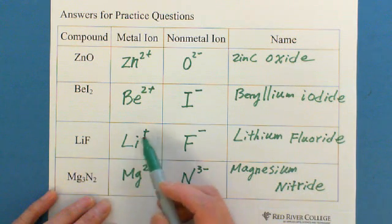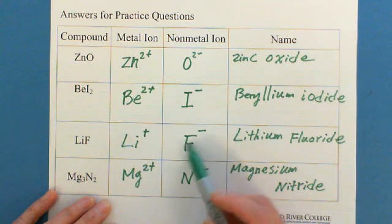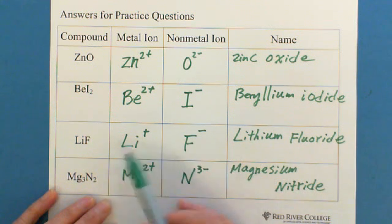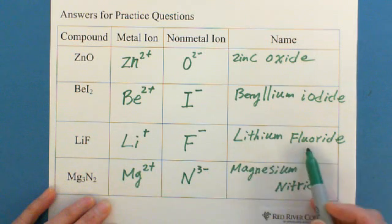LiF, lithium is recognized in the first group, 1+, F negative one, is seven groups, fluorine. To name this binary ionic compound, lithium fluoride.